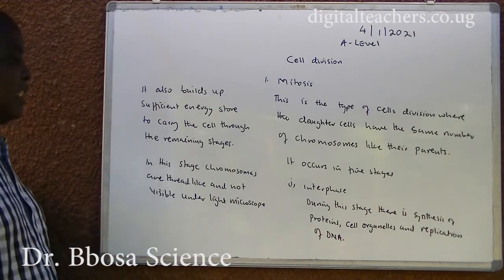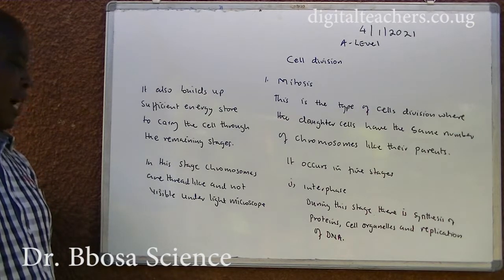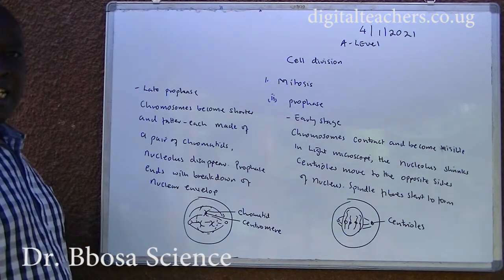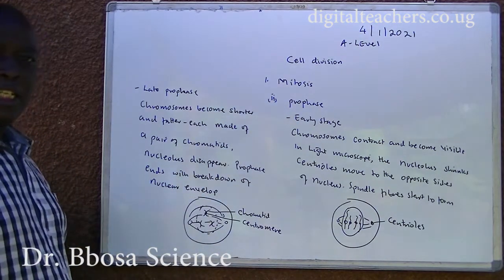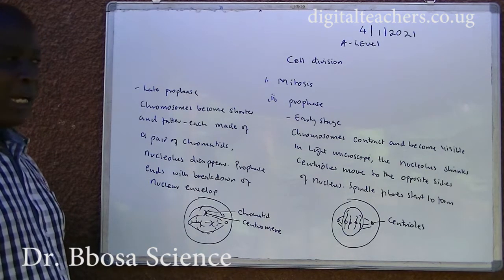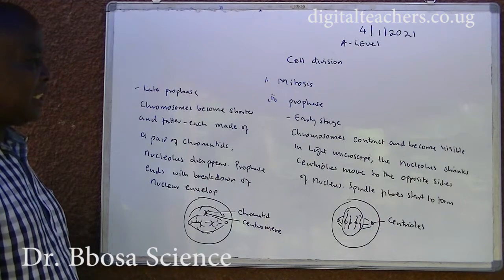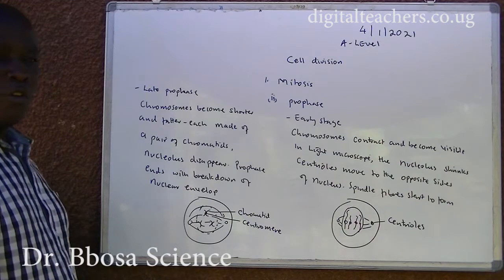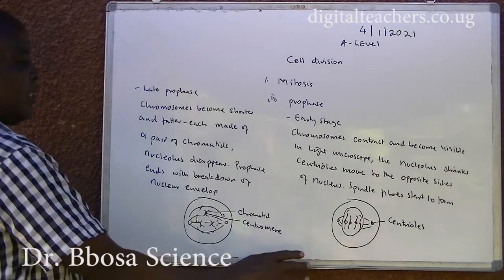In interphase, chromosomes are thread-like and are not visible under a light microscope. It also builds up sufficient energy storage to carry the cells through the remaining stages. The second stage of mitosis is prophase. During prophase, chromosomes contract and become visible in a light microscope. Nucleolus shrinks. Centrioles move to opposite sides of the nucleus. Spindle fiber starts to form.